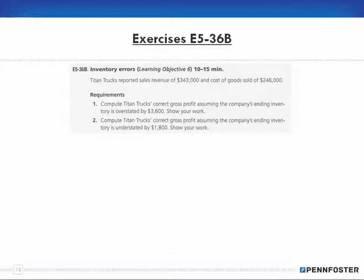We left off with problem number 35, so we're now working on problem number 36. It says here that Titan Trucks reported sales revenue of $343,000 and cost of goods sold of $246,000. As soon as I read sales revenue, I'm thinking about the income statement — revenues less expenses. When it says cost of goods sold, I'm thinking revenue less cost of goods sold gives me gross profit, and from gross profit I subtract expenses to get profit and loss.